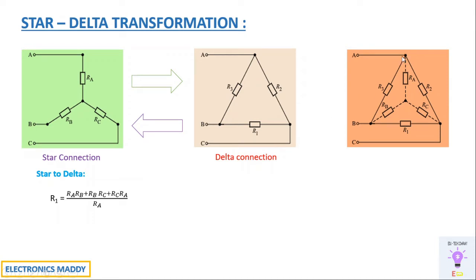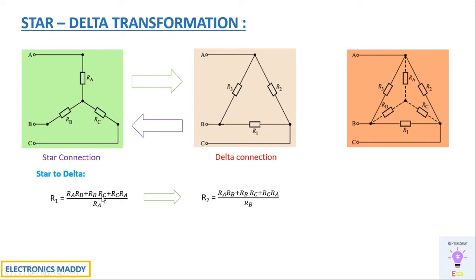For star-to-delta conversion, Ra is converted as R1, Rb as R2, and Rc as R3. The formula for R1 is: R1 = (Ra·Rb + Rb·Rc + Rc·Ra) / Ra. The resistance in the denominator is the one opposite to R1 in the star configuration, which is Ra.